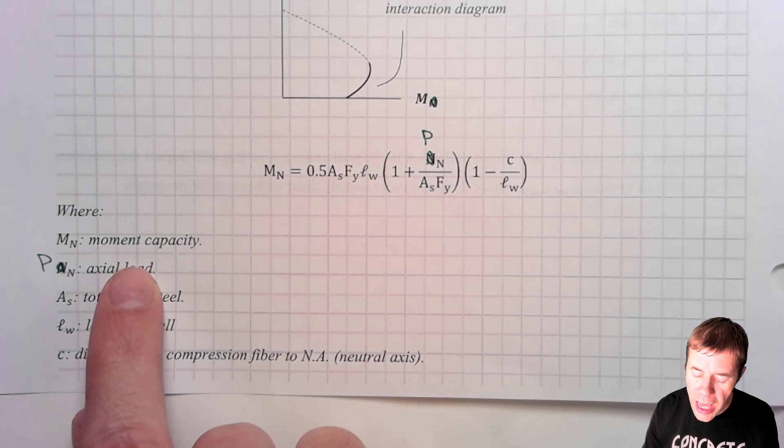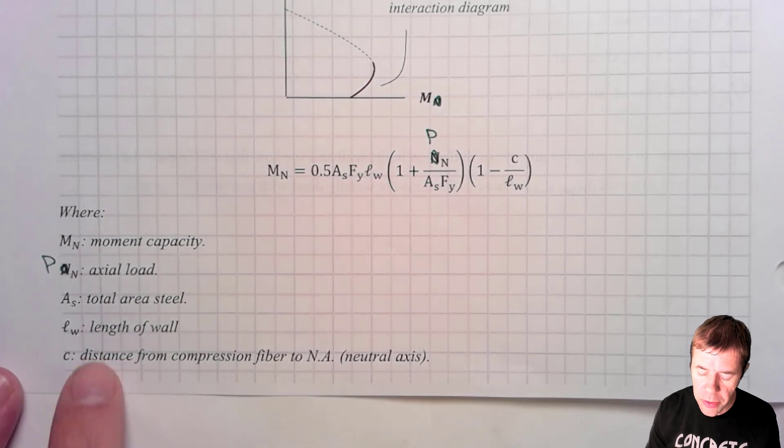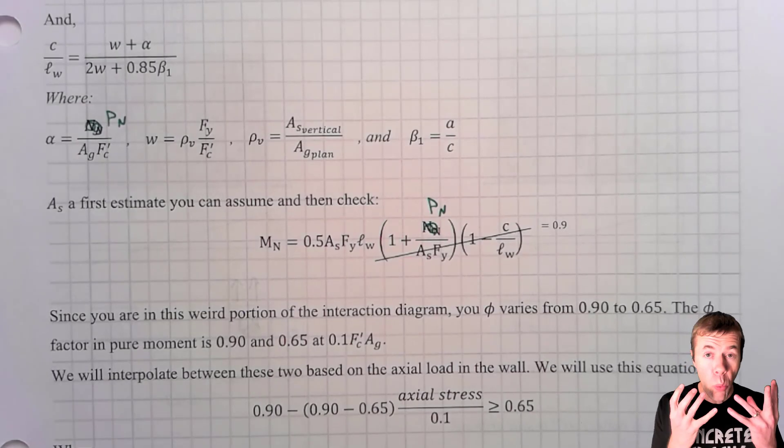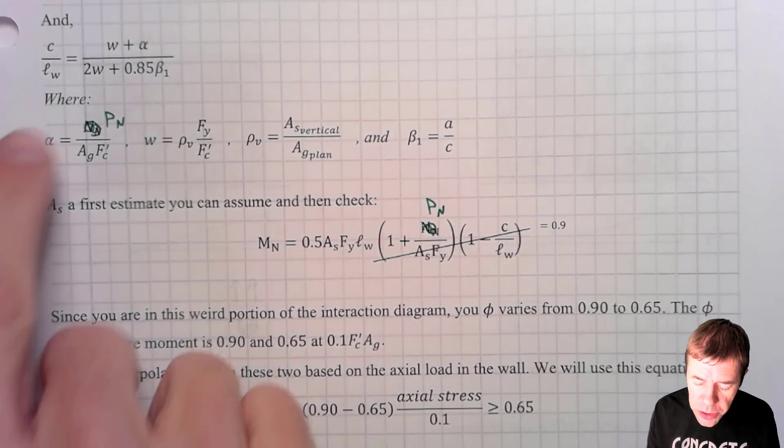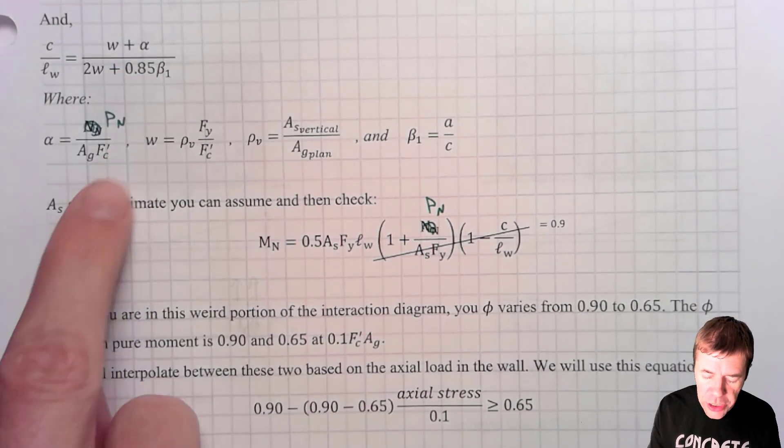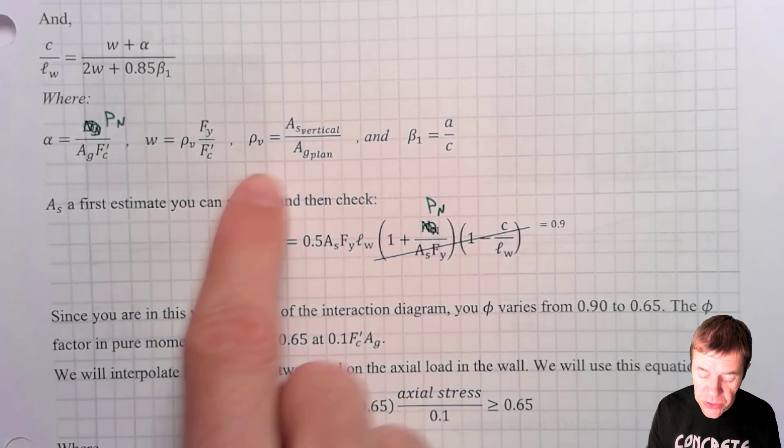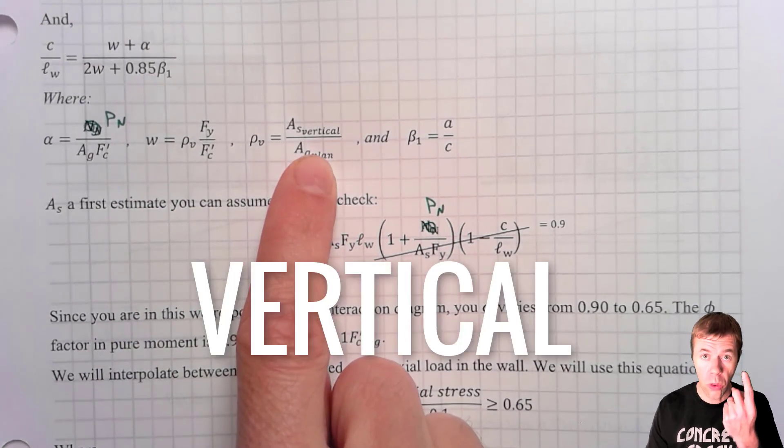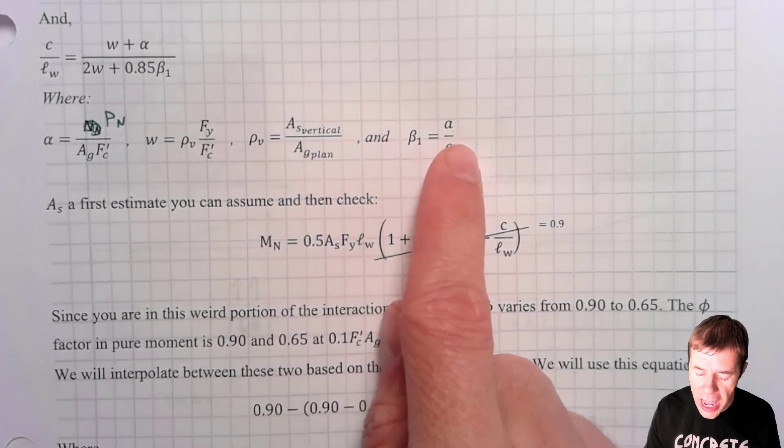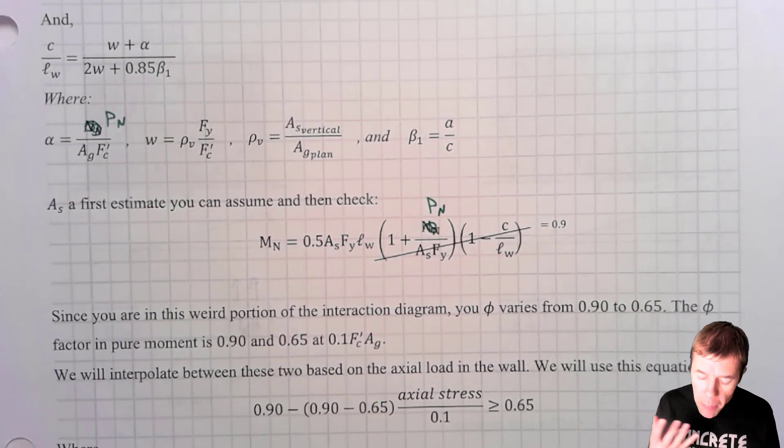MN is the moment capacity. PN is the axial load that is on the structure. AS is the total area of steel. LW is the length of the wall. And C is the distance from the compression fiber to the neutral axis. But wait, there's more. There's this term C over L sub W, which is equal to all of this business. This alpha is PN over AGF prime C. W here is rho sub V, FY over F prime C. Rho sub V is the area of steel vertical divided by the area gross of the plan. And beta one is A over C or alpha over C. And everything goes into this big thing here.